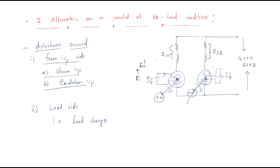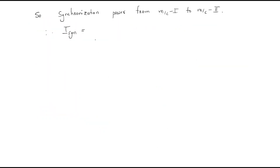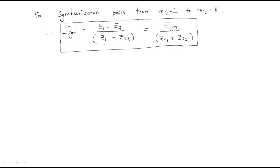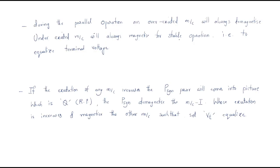E1 value increases, E2 remains. The synchronizing current flows like this. The synchronizing current value equals (E1 minus E2) divided by (Zs1 plus Zs2). So the difference between E1 and E2 — which is the synchronizing EMF — divided by (Zs1 plus Zs2) gives us the synchronizing current.